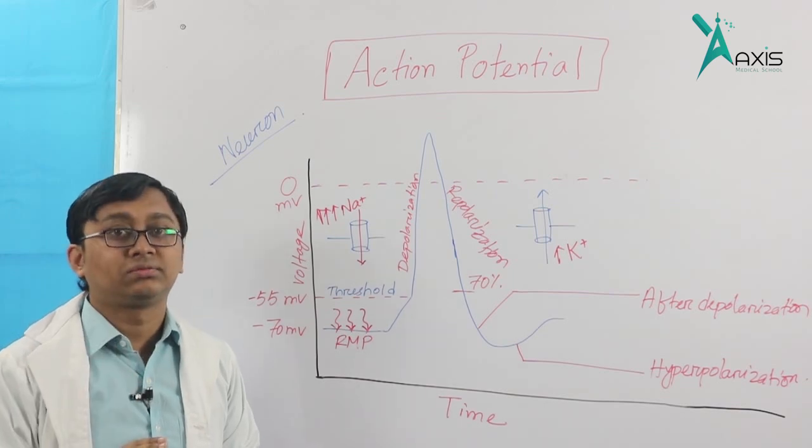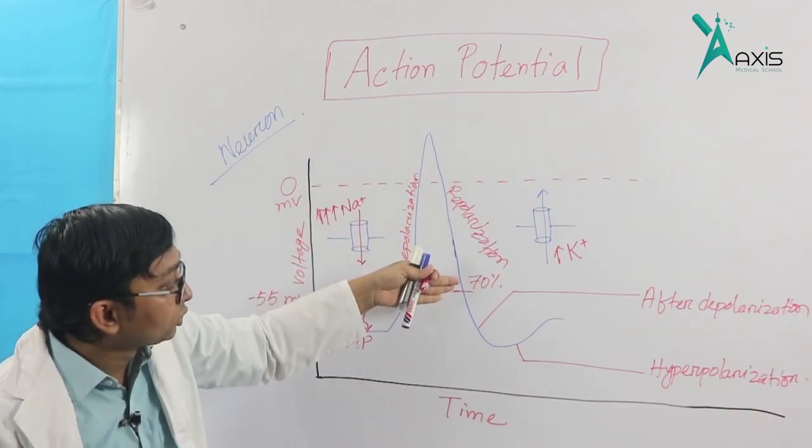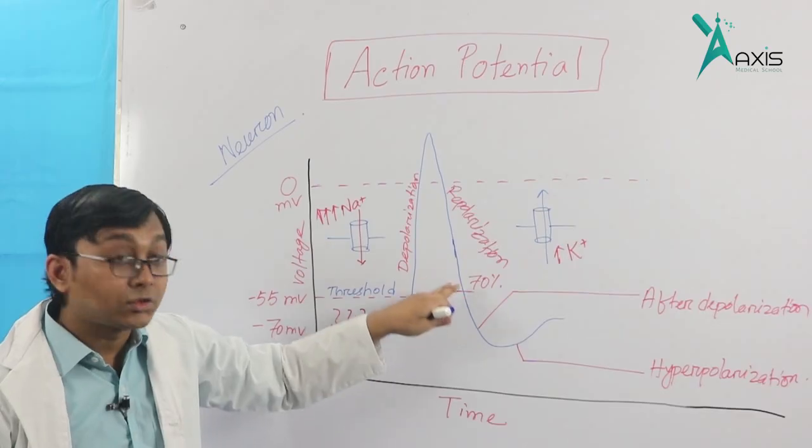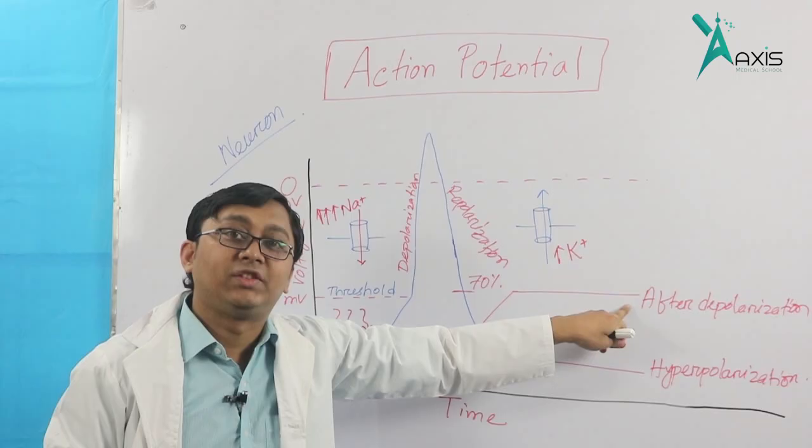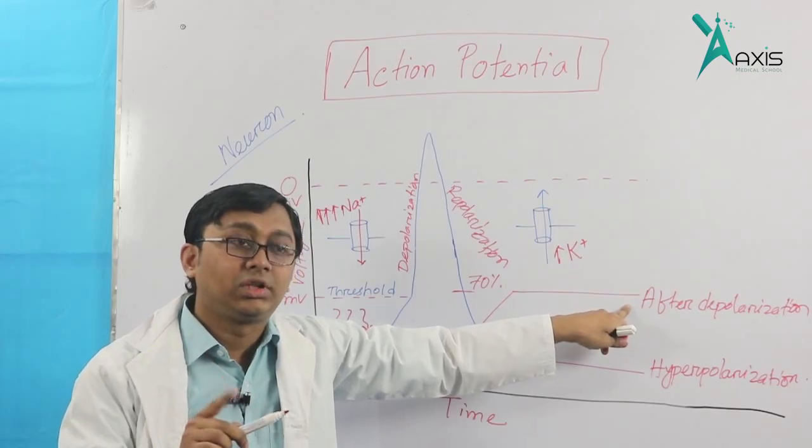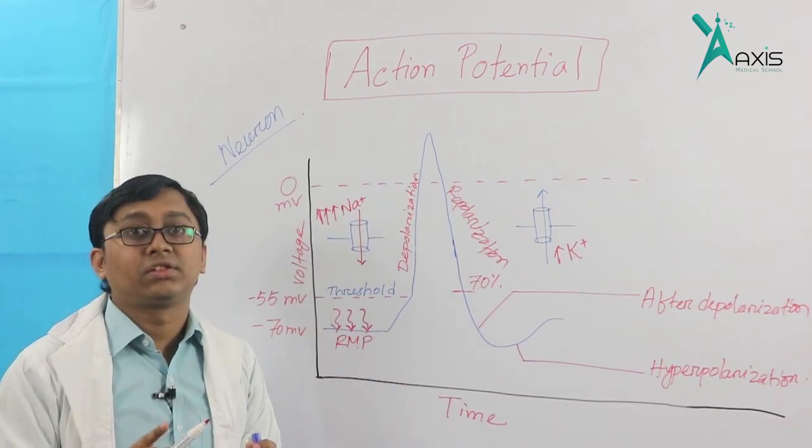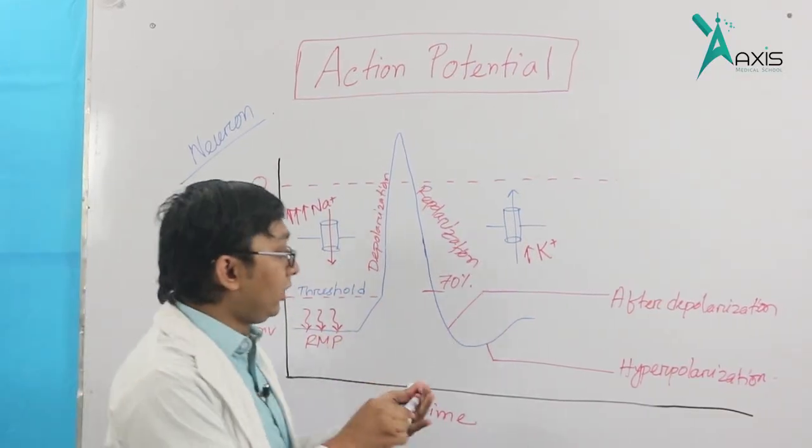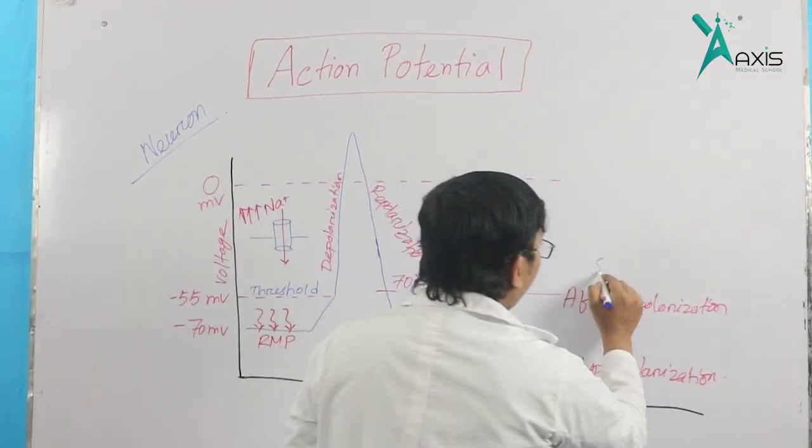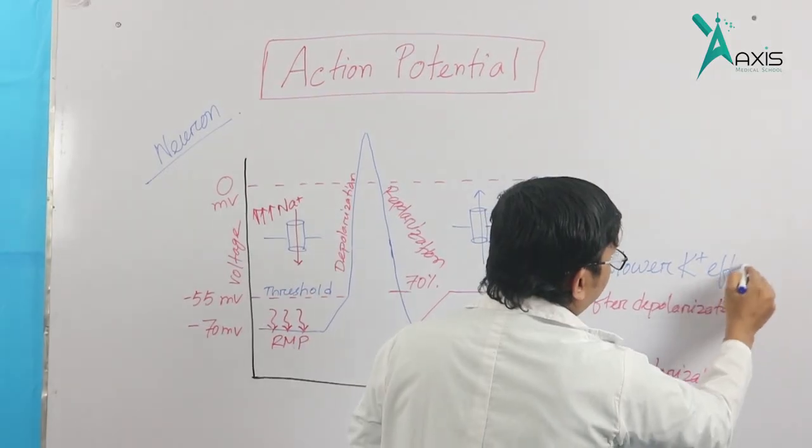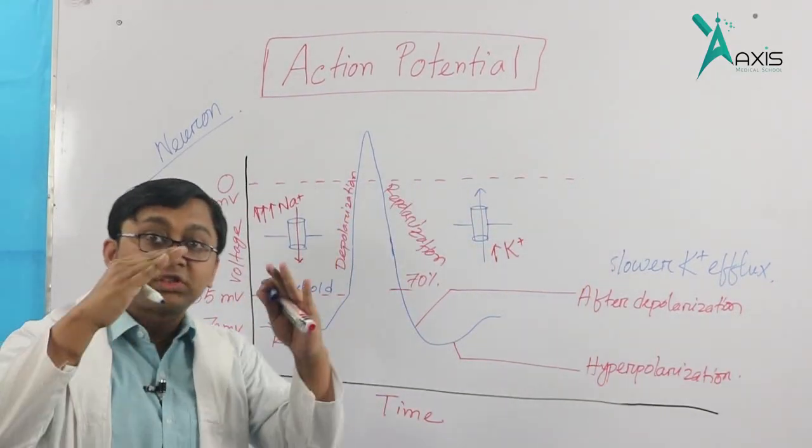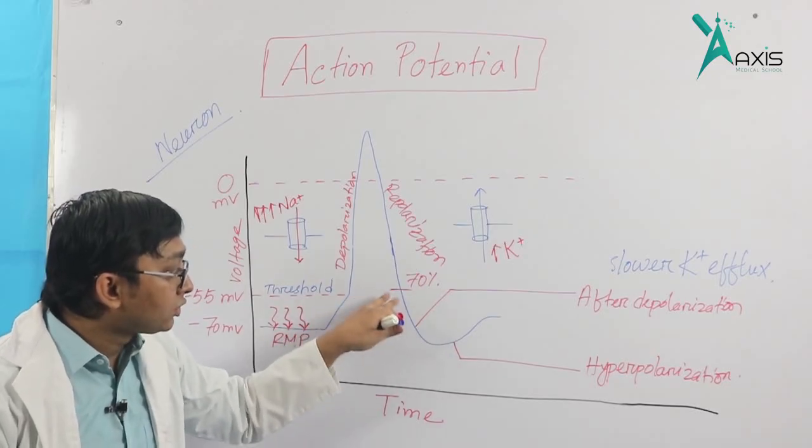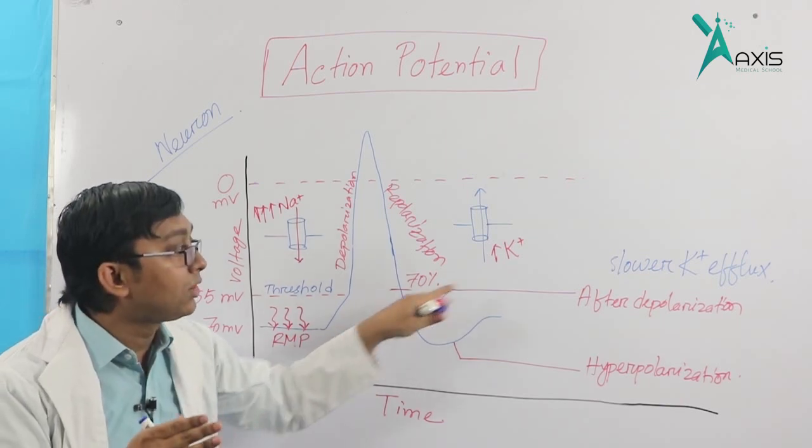This is a very slow process. As you know, repolarization starts rapidly, but then it slows down. The decrease of repolarization becomes slower. After depolarization, try to understand this process - it's very important. This slower potassium efflux means the process becomes slow. The efflux happens slowly. This is relatively slow repolarization, which we call after-depolarization.